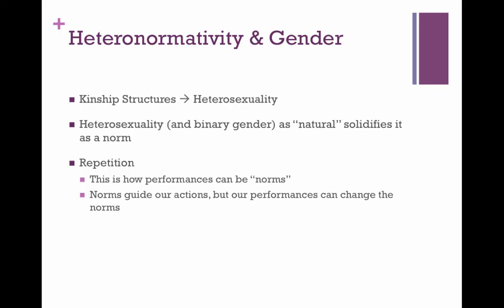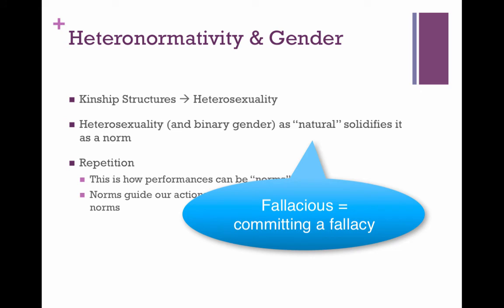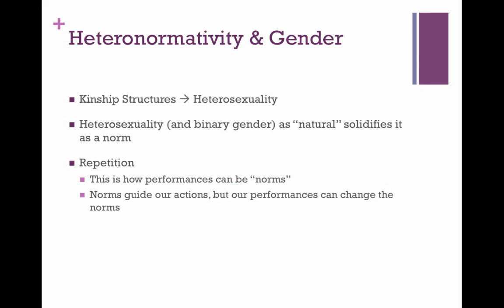Butler goes on to talk about heteronormativity in gender. Historically, kinship structures dictated a norm of heterosexuality for the sake of spreading familial ties along small communities — this is also where incest taboos come from. Saying that heterosexuality is natural works to solidify it as a norm, and this is where the fallacious claim comes about that the natural is right. Heteronormativity and gender are repetitive acts, which is why the performances can be dubbed norms. The norms guide our actions, but our performances can in turn inform changes in the norms.